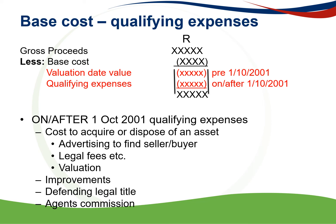Qualifying expenses that form part of the base cost: you get your gross proceeds, then you deduct your base cost, and it consists of your valuation date value if the asset was acquired before 1 October 2001, and then there are also qualifying expenses incurred on or after 1 October 2001. For assets purchased on or after 1 October 2001, there won't be a valuation date value — only qualifying expenses. These can include the cost to acquire or dispose of an asset, advertising to find a seller or buyer, legal fees, transfer costs, valuation fees, improvements incurred by the taxpayer, legal fees paid to defend the legal title, and agent's commission.